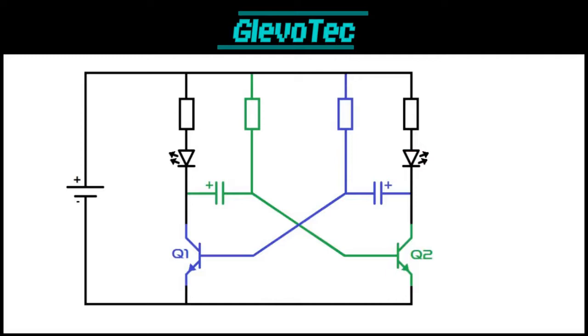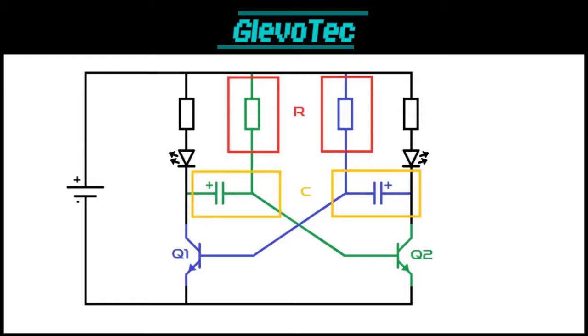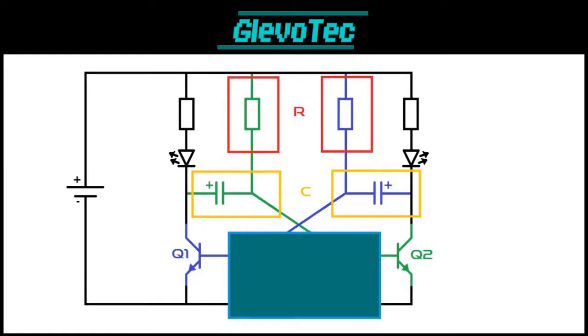This circuit can be used in many ways. If you want to blink only one LED, simply remove the LED on one side and connect the resistor directly. It is important that these resistors are the same value. And the capacitors must be equal as well. The oscillation frequency is determined by the combination of the resistors and capacitors. It can easily be calculated by the simple formula. R is the value of one resistor and C is the value of one capacitor. F will be the frequency in Hertz.